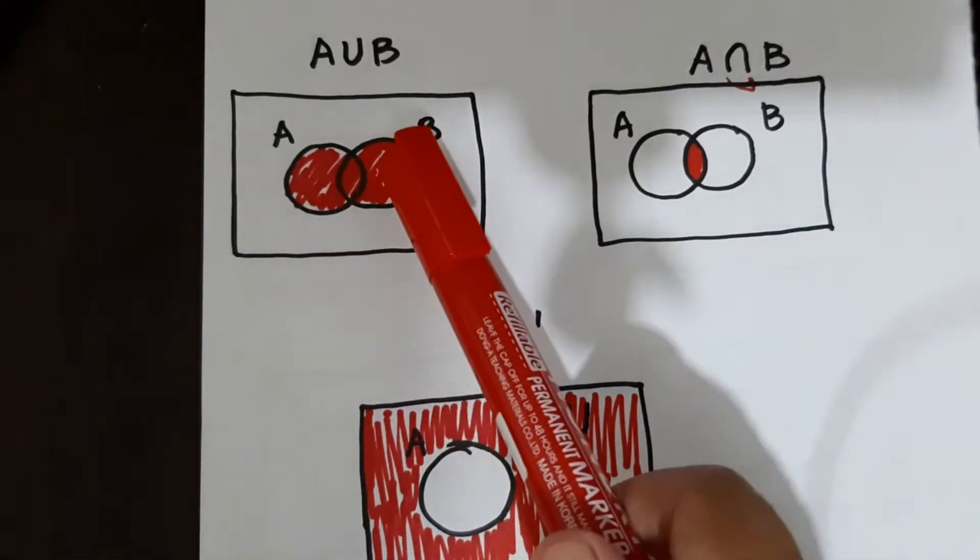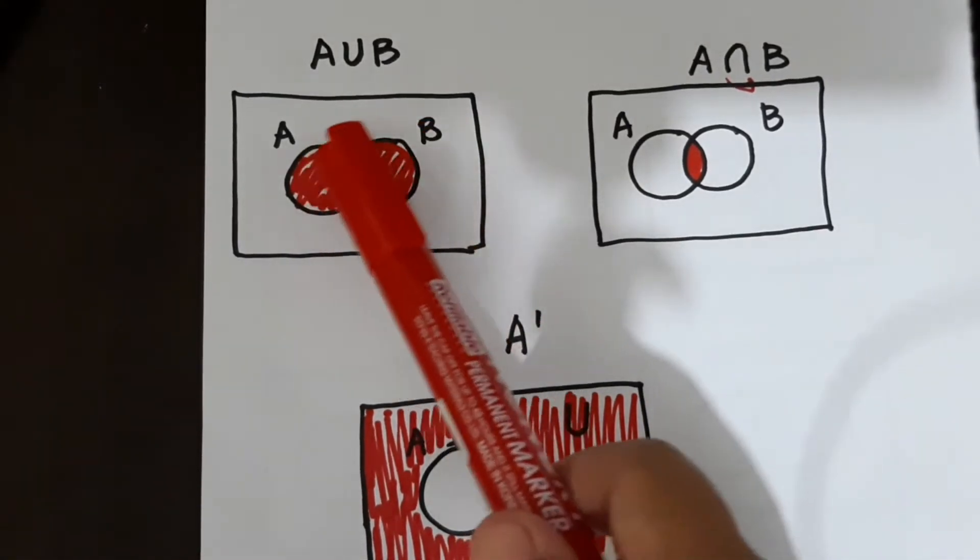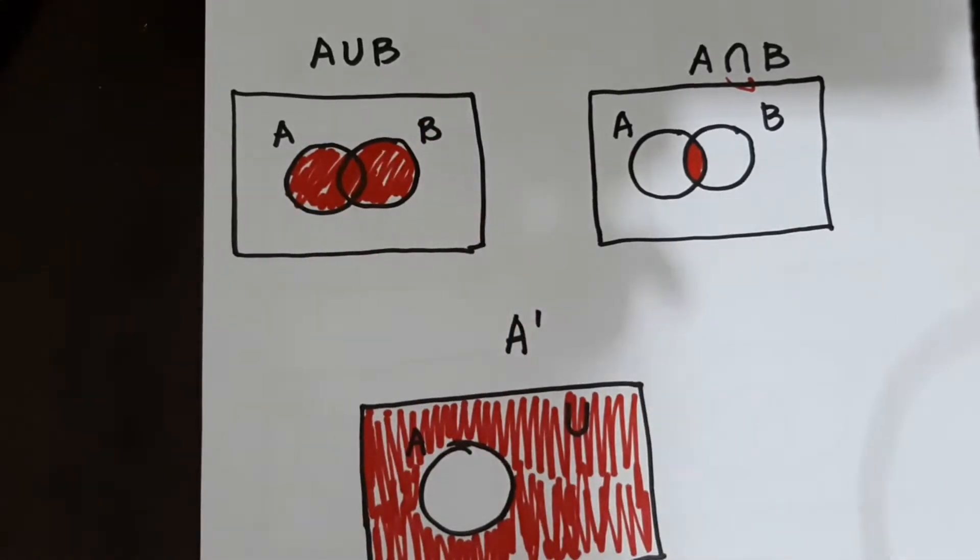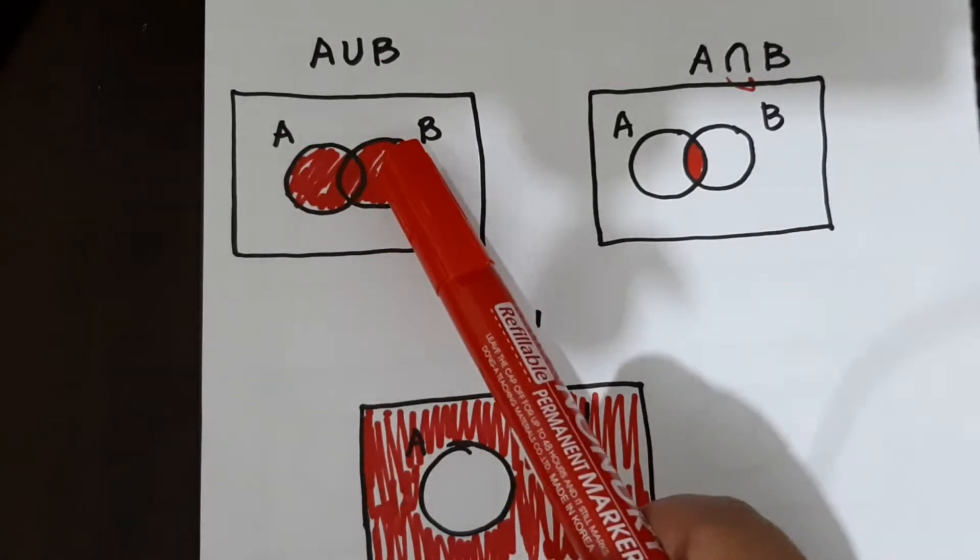So if you'll notice here, lahat ng elements sa loob ng set, ng dalawang set ay kasali. So sinayda natin lahat, okay?